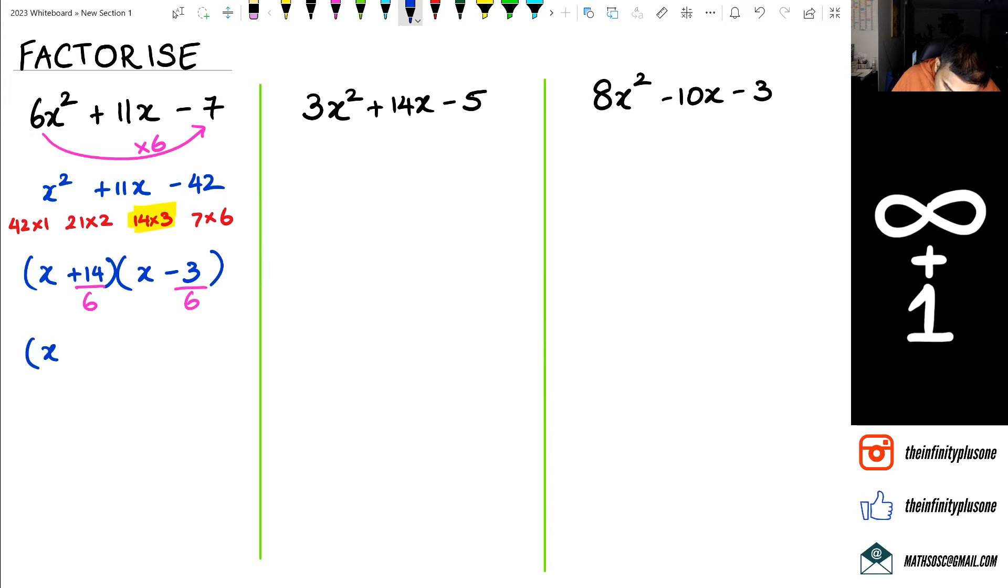And then minus 3 over 6 can be written as negative 1 over 2. Now here comes the beautiful part of this I don't know how it works but it works. The 3 ends up in front of the x and the 2 ends up in front of the x in this factor.